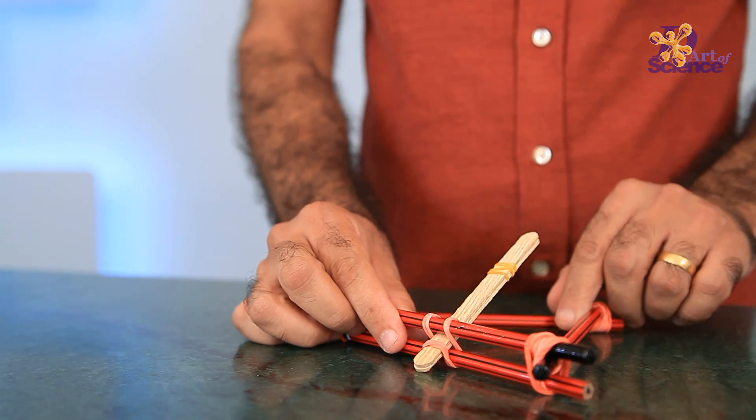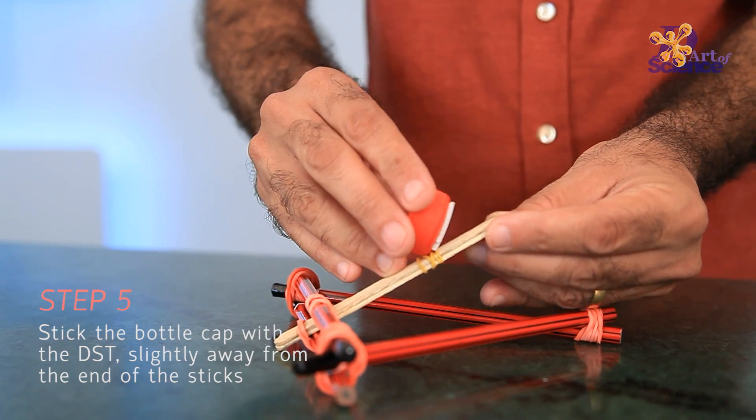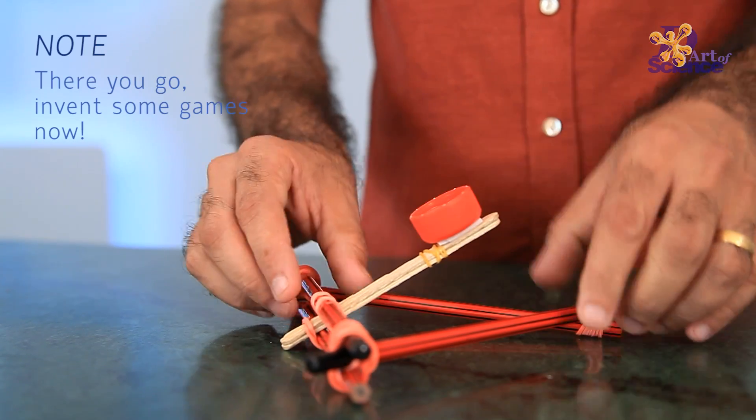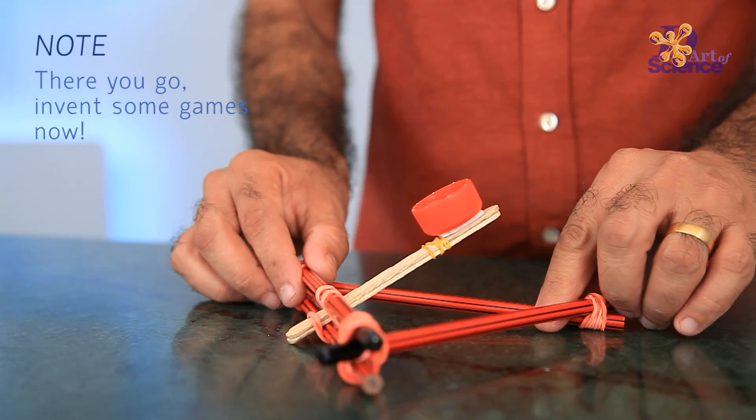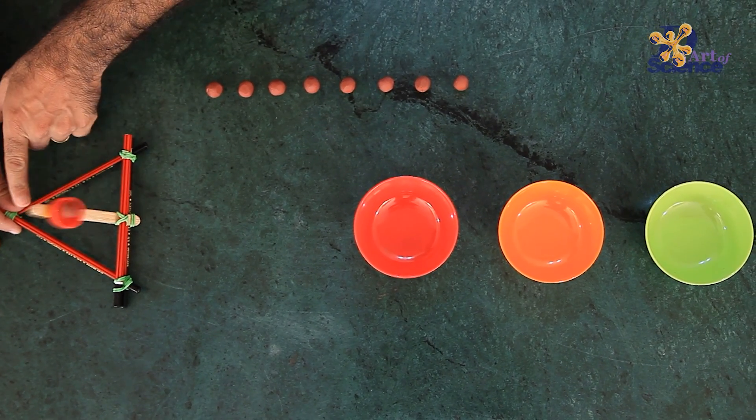Well, when we pull back the rubber band, it tries to return to its initial shape. We use this property to create a catapult where the objects are propelled using the force that the elastic material is applying to regain its shape.